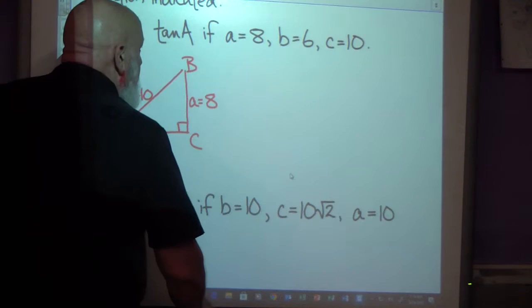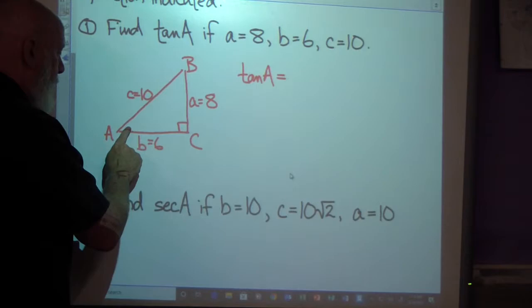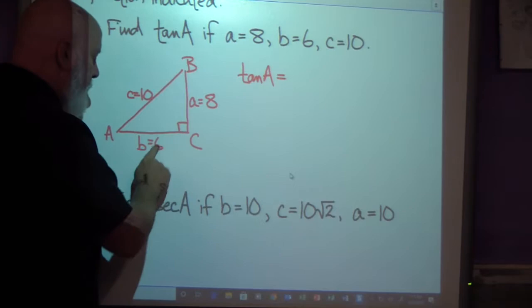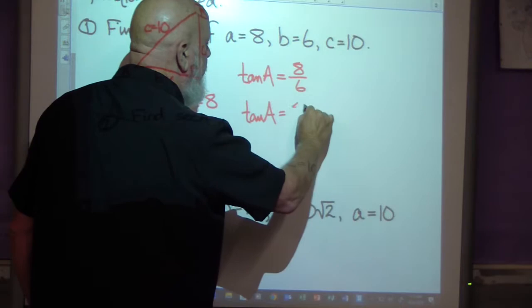With that in mind I'm asked to find the tangent of A. It's pretty straightforward. You just use the definition of the tangent from the perspective of angle A. Here's angle A. The tangent is defined as opposite over adjacent. Opposite over adjacent will give me 8 over 6 if I haven't made any mistakes. And then I'll reduce. In this case the tangent of A would be 4 over 3.